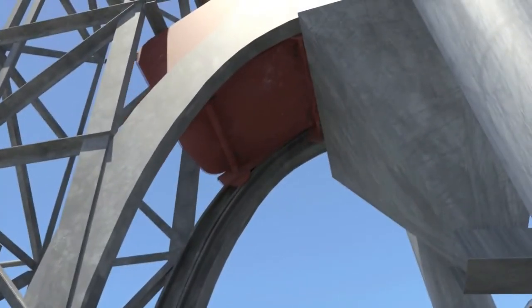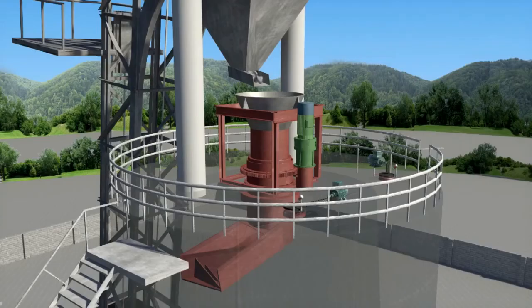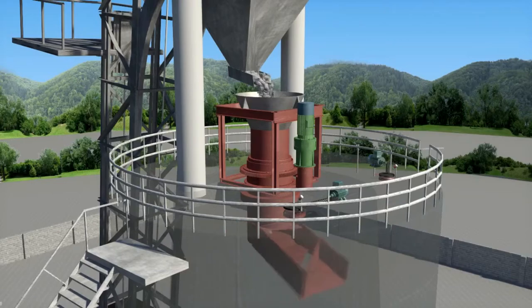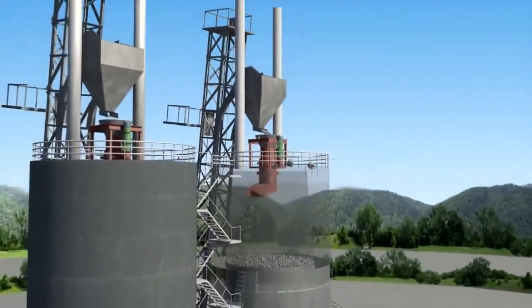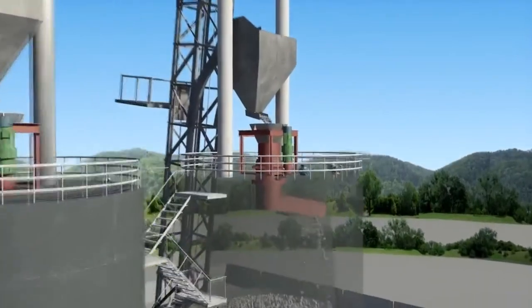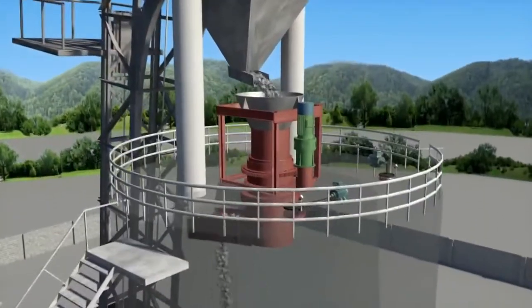When the mixed materials go into the buffer hopper on the top roof of the lime kiln, the rotary distributing device starts to operate. The mixed materials are evenly distributed inside the kiln. When it's done, the rotary distributing device stops working.